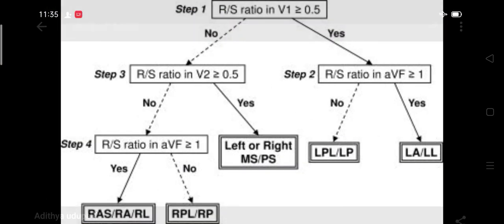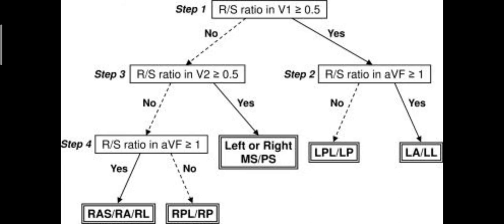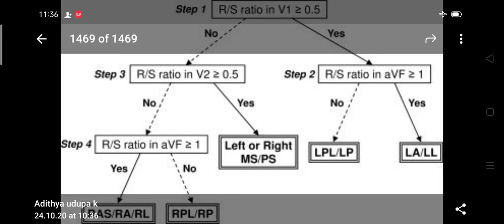Another easy method: R/S ratio in V1 more than 0.5 indicates a left-sided pathway. If inferior leads are positive, you are dealing with anterolateral or lateral pathway. If inferior leads are negative, it is posterolateral pathway. If R/S ratio in V1 is negative (not positive), you are dealing with a right-sided pathway. Early transition = septal pathways. Late transition with AVF positive = anteroseptal or anterolateral. AVF negative = posterolateral or right posterior pathway.